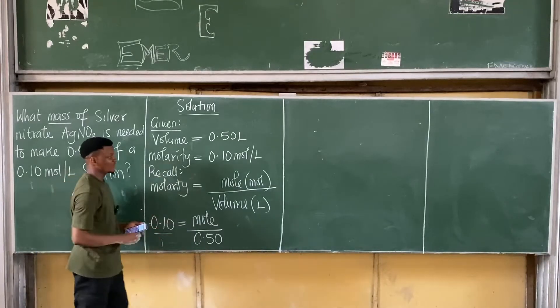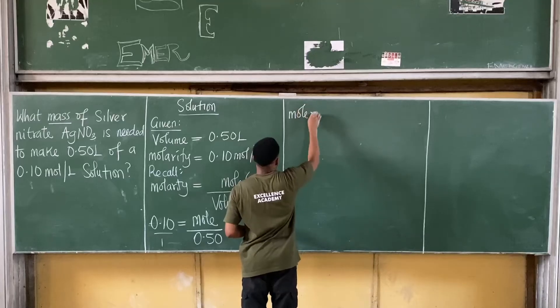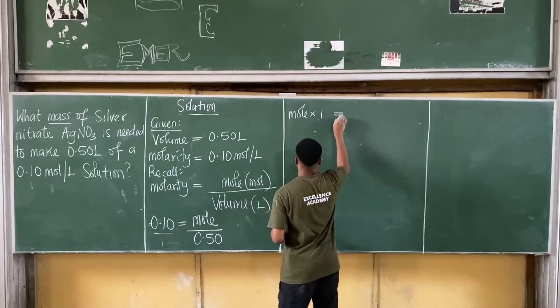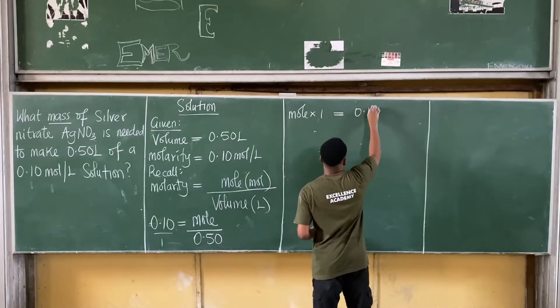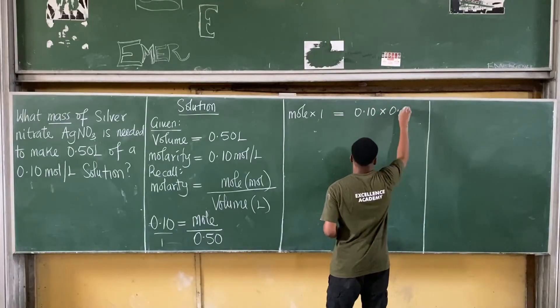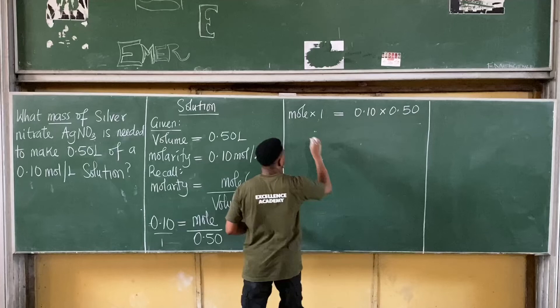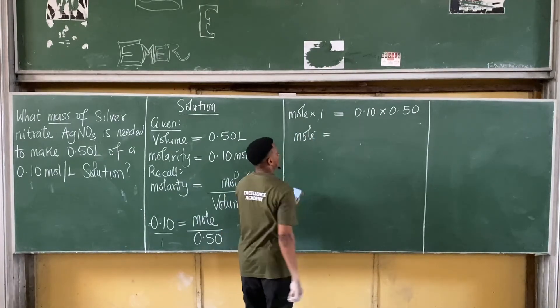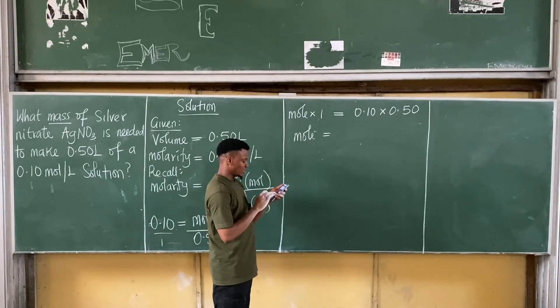So moles times 1 gives me moles. So I have that moles times 1, so it's usually this times this is equal to this times this. That's 0.10 multiplying 0.50. Alright, so if I multiply this, moles times 1 is moles. Because as we said, anything times 1 is that thing.